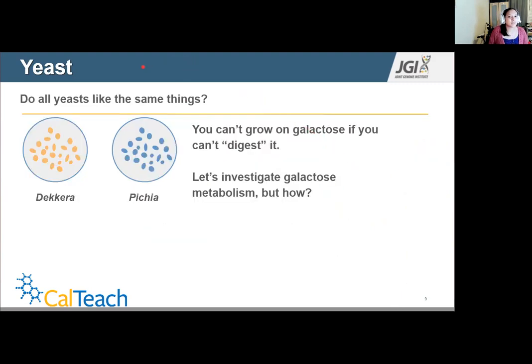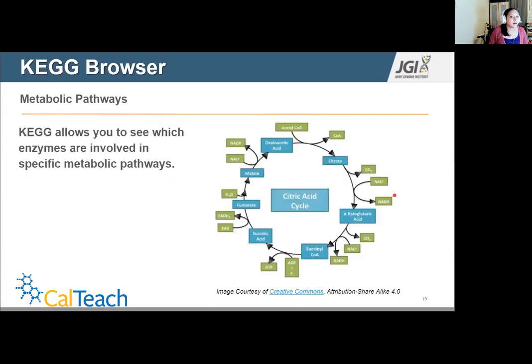So it turns out that these two yeast species are named Dekkera and Pichia. They are part of the same family. So why can't they both grow on galactose? Well, you can't really grow on something if you can't digest it. If you can't eat it, you can't gain anything from it. So you can't really grow on it. And this answer turns out to be related to galactose metabolism, which is essentially the eating of a sugar. If you can't eat galactose, can't grow on it.